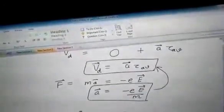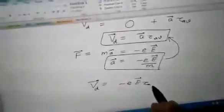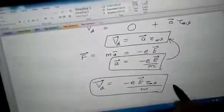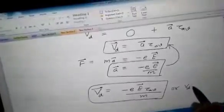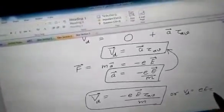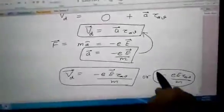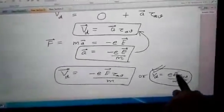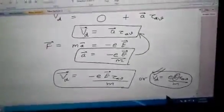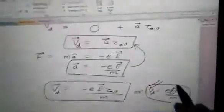If we put this value here, we get drift velocity as minus e E vector into tau average upon m. Or if we write without vector, we can write vd as e E tau by m. So here you can see that the drift velocity is directly proportional to the external electric field applied. So more is the electric field means more is the average velocity.